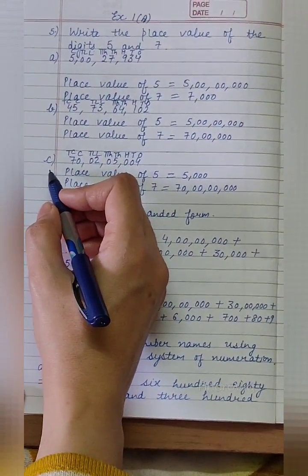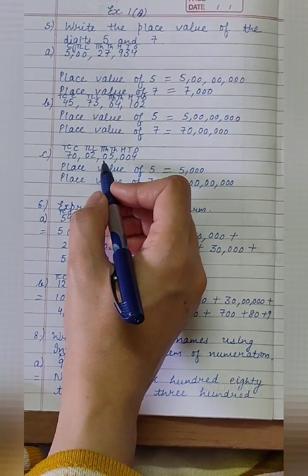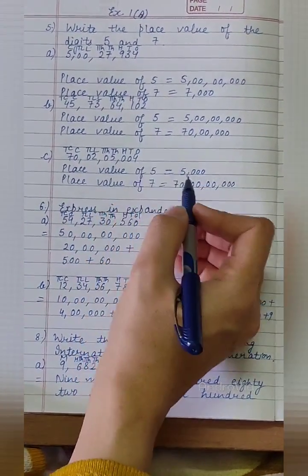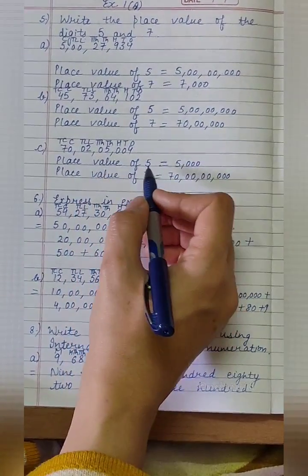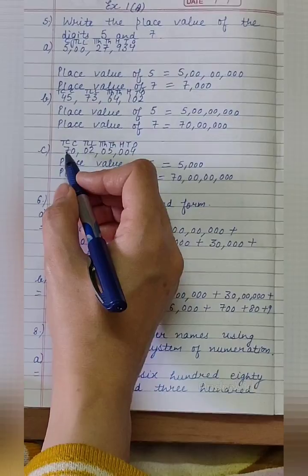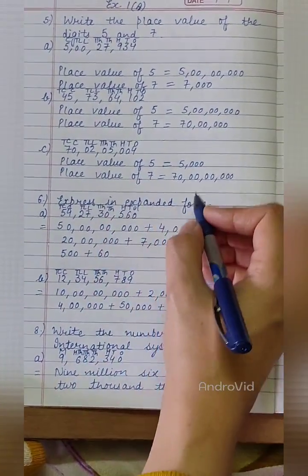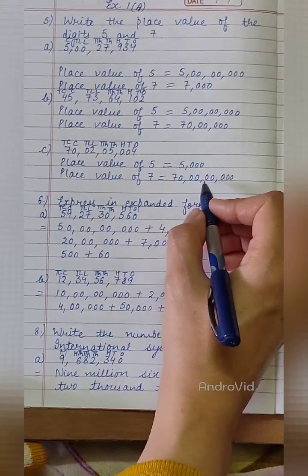Now, part C is 700205004. Here, 5 is at thousandth place, so its place value will be 5000. And 7 is at 10 crore's place, so its place value will be 70 crore.